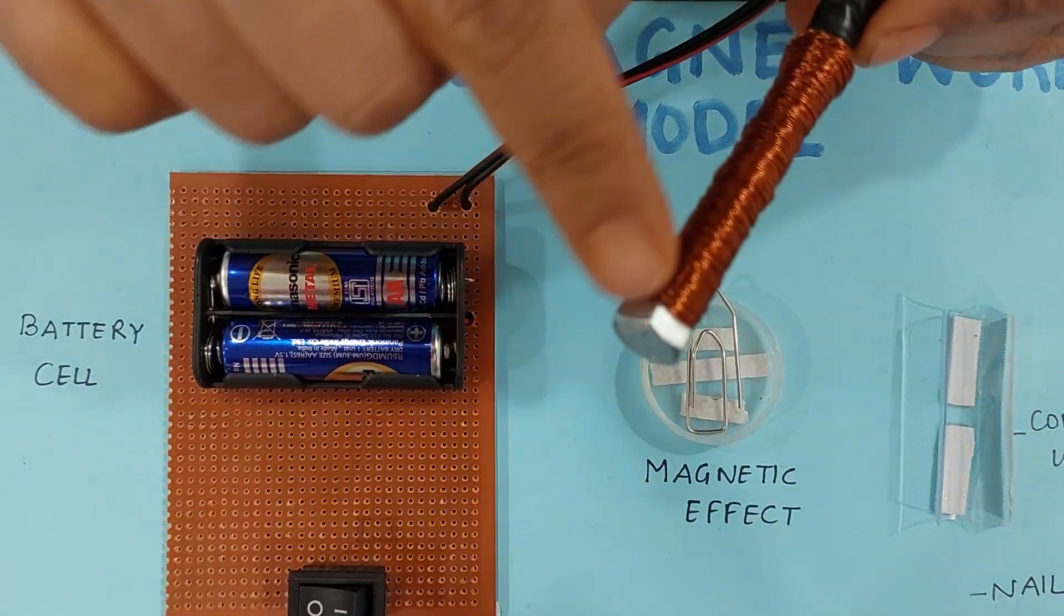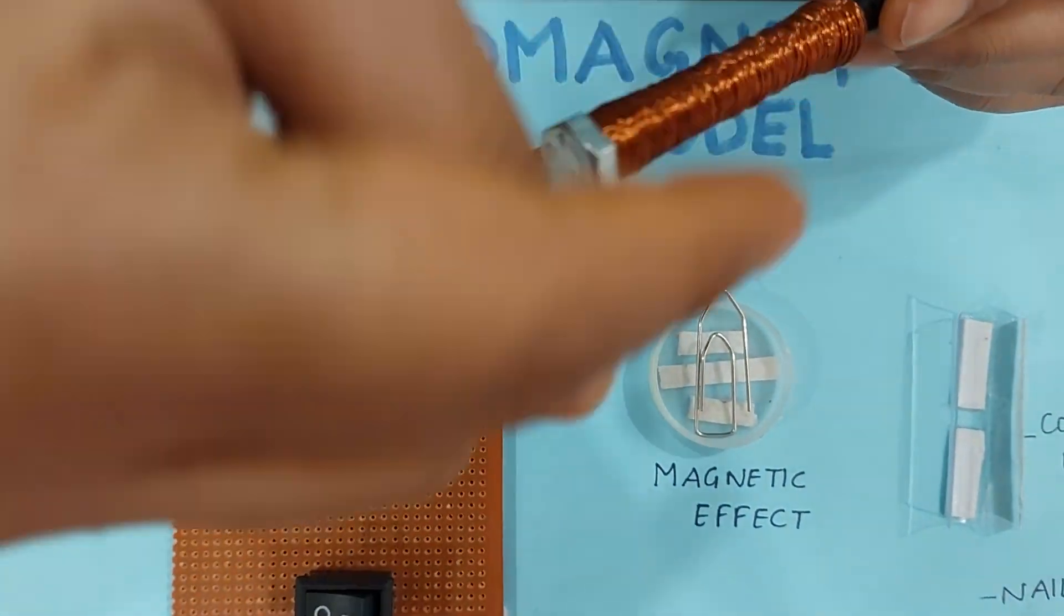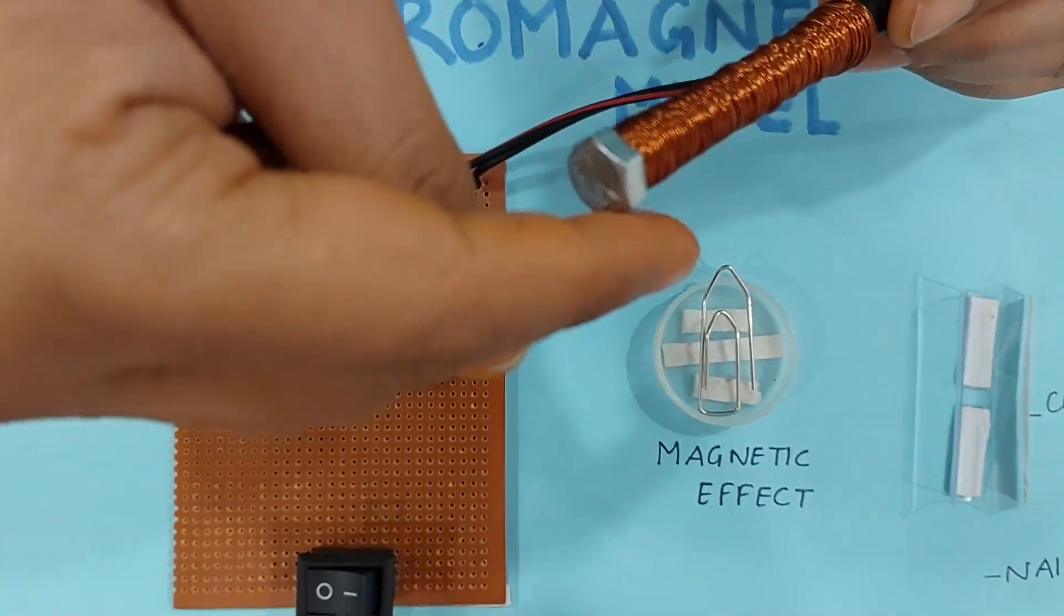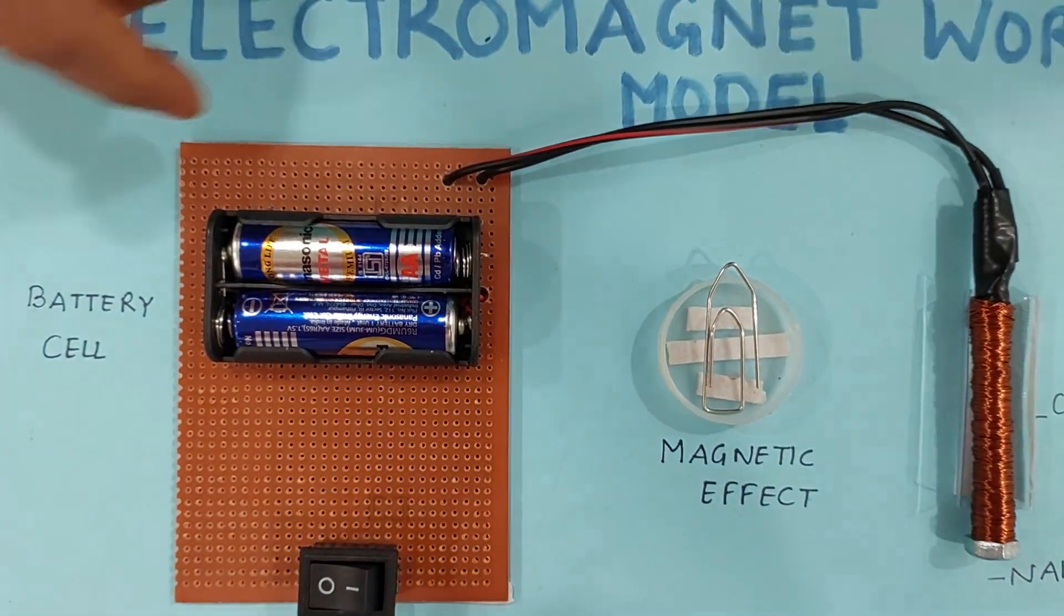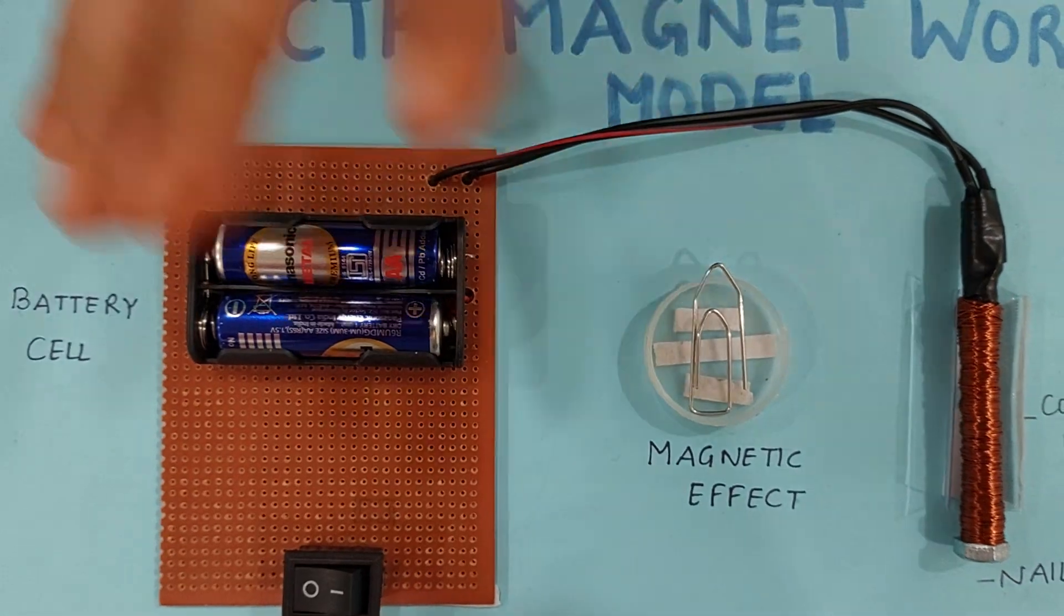And you know one thing more, this iron nail, the more the number of coiling of copper wire in it, the more magnetism it will show.